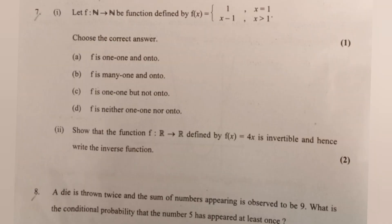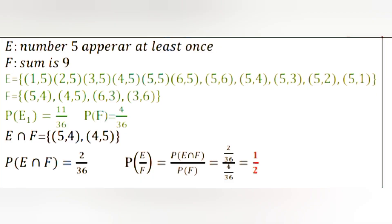A die is thrown twice and the sum of numbers appearing is observed to be 9. What is the conditional probability that the number 5 has appeared at least once? Let E be the event that 5 appears at least once, and F be the event that the sum is 9. E = {(1,5),(2,5),(3,5),(4,5),(5,5),(6,5),(5,6),(5,4),(5,3),(5,2),(5,1)}.